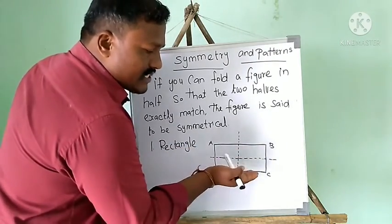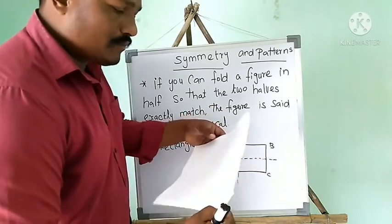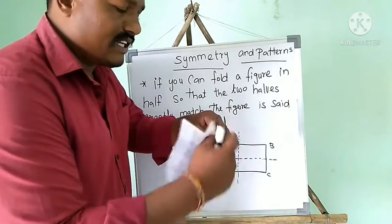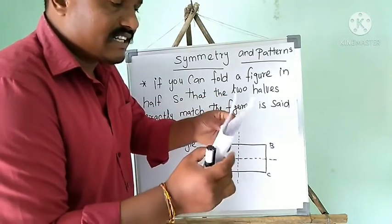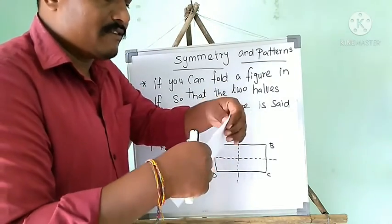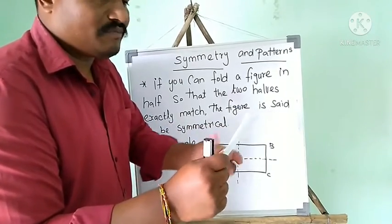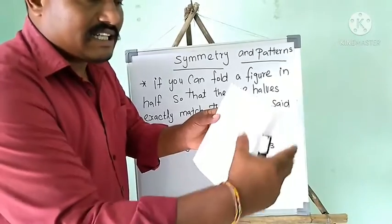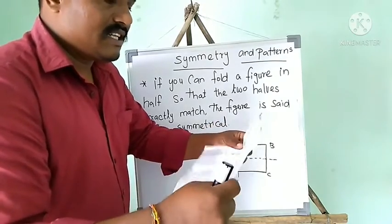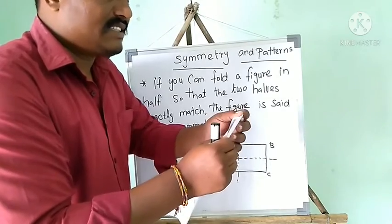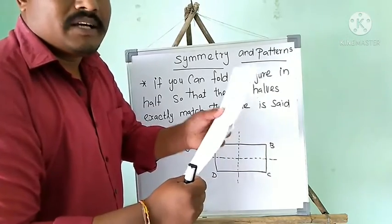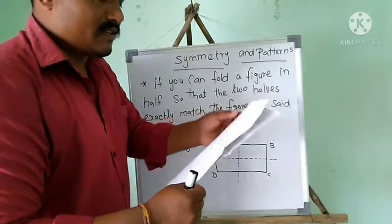If you take a rectangle-shaped paper and fold it on one side, you can see that this part and this part match exactly. So this is one line of symmetry. If you fold the other way, this side and this side also exactly match. So it is symmetrical in that direction too.